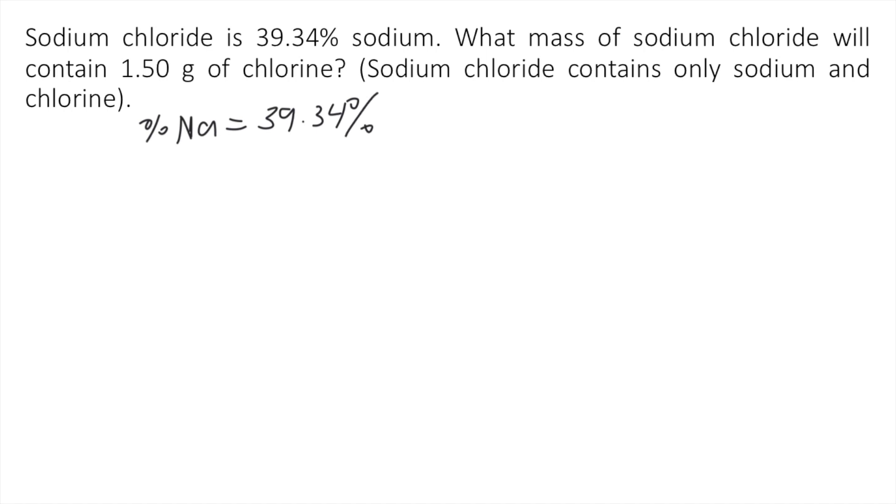Now, given this, you can actually solve for the percent of chlorine. So how do you do that? Percent of chlorine is just 100% minus 39.34%. So 100 minus 39.34 equals 60.66% of chlorine.